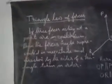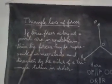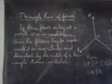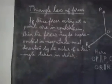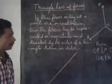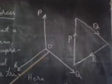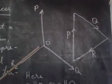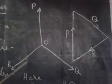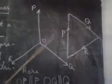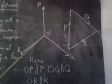Please look here. The triangle law of forces states that if three forces acting at a point are in equilibrium, then the forces may be represented in magnitude and direction by the sides of a triangle taken in order. Suppose three forces P, Q, R are acting at a point O, and if the point O is in equilibrium, then each force may be represented in magnitude and direction by the sides of a triangle taken in order.